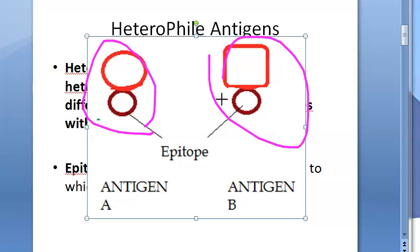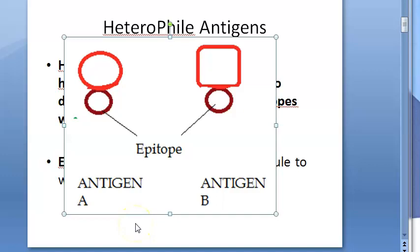They become heterophile antigens because they have the same epitope. What is an epitope? An epitope is the part of an antigen that binds to the antibody.